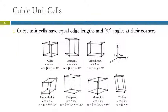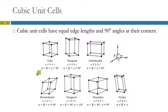There are many types of unit cells, as illustrated here. There's monoclinic, triclinic, tetragonal, orthorhombic, et cetera. The difference between them is what the angles are at the corners and how long the sides are.